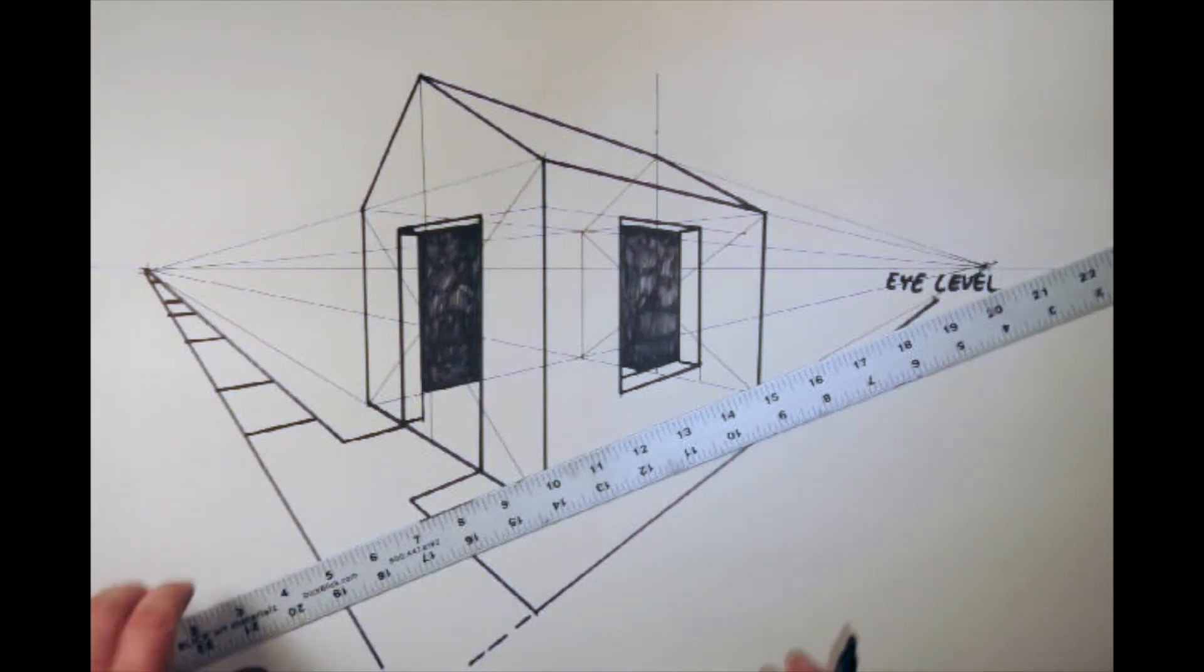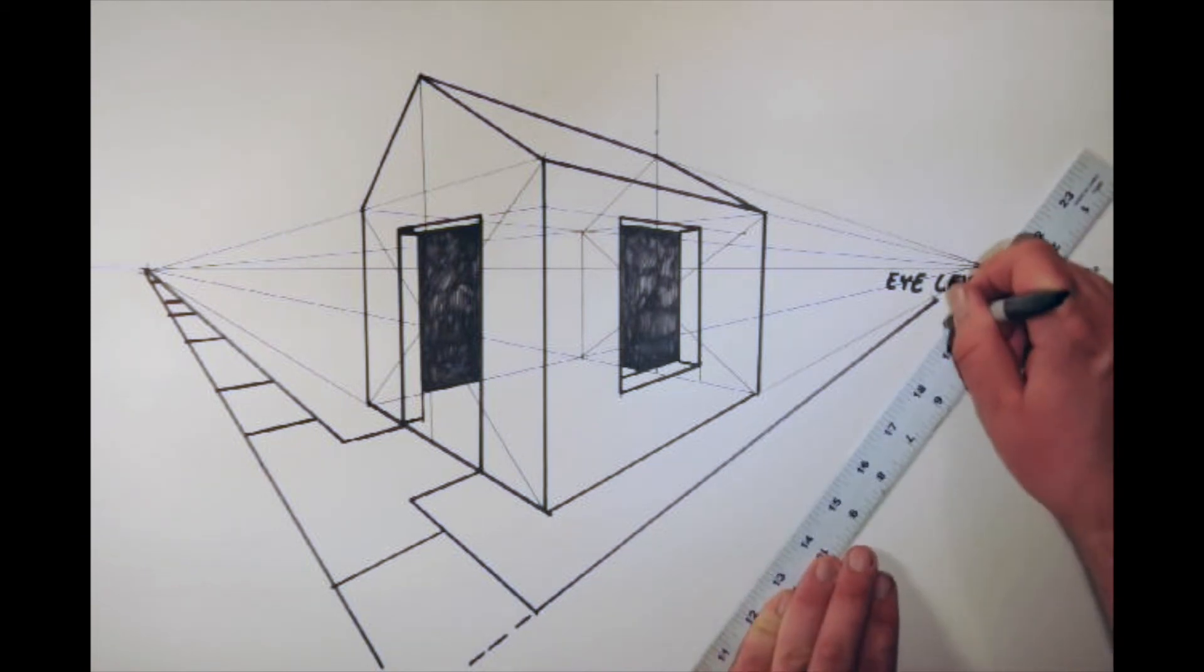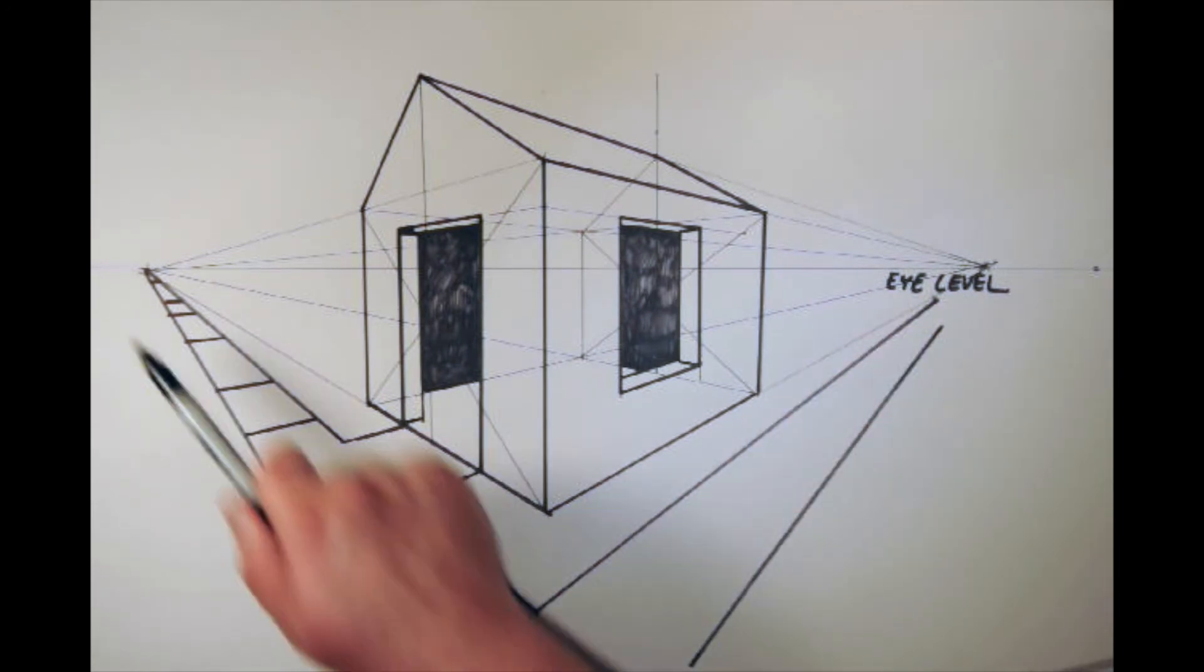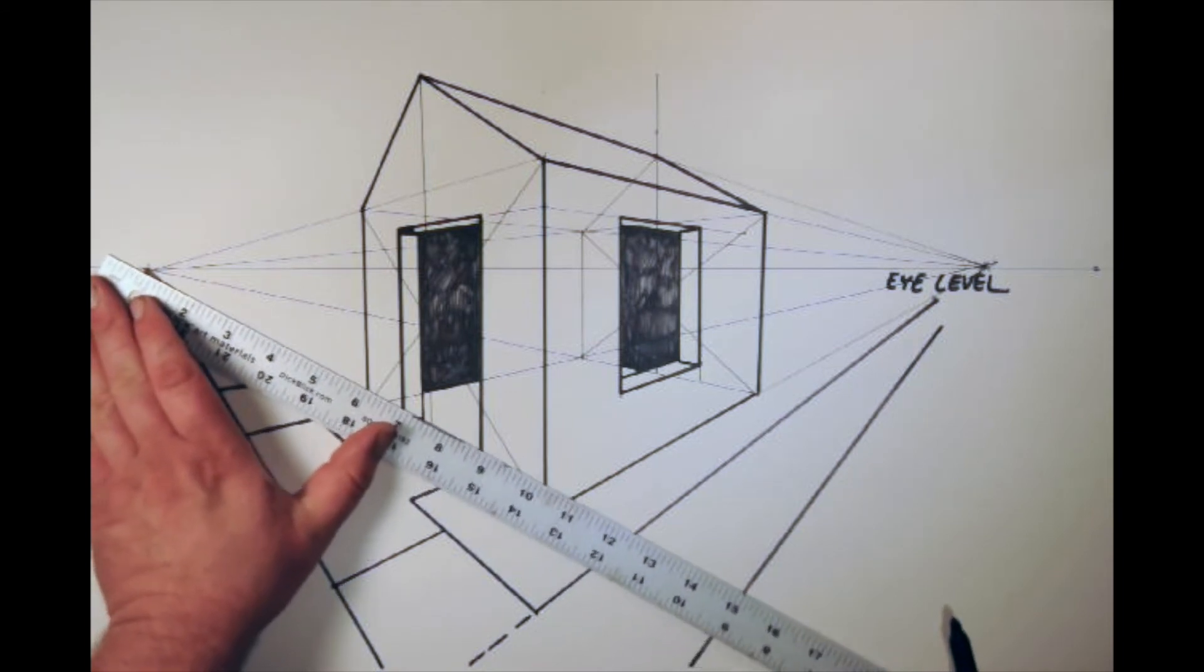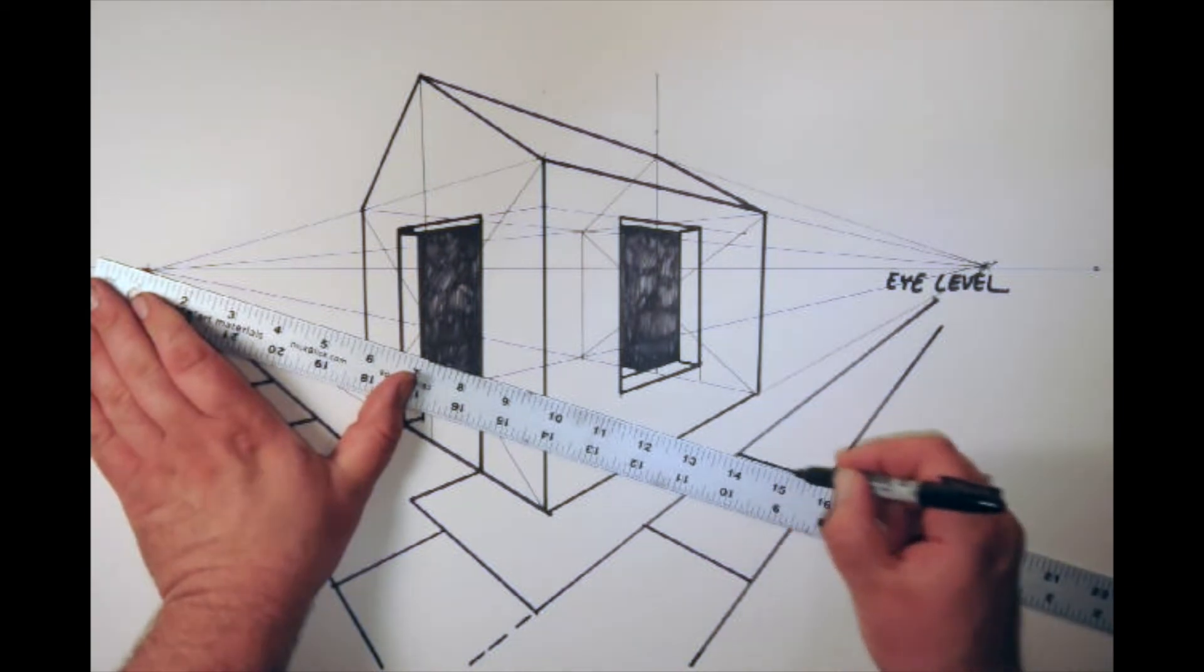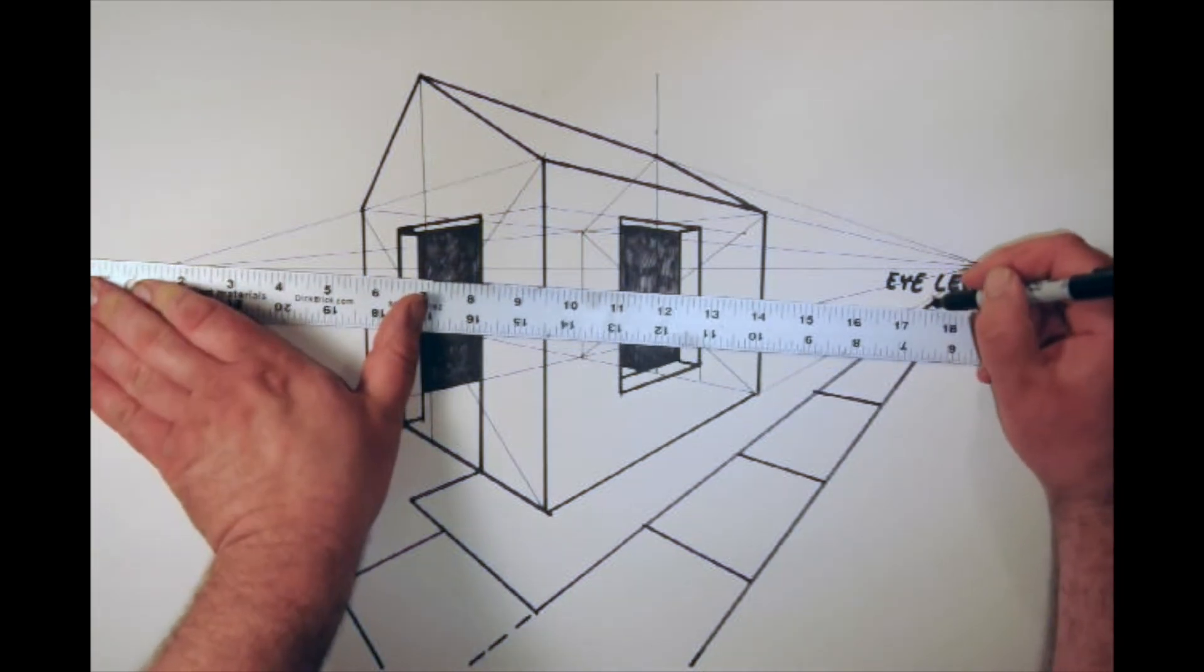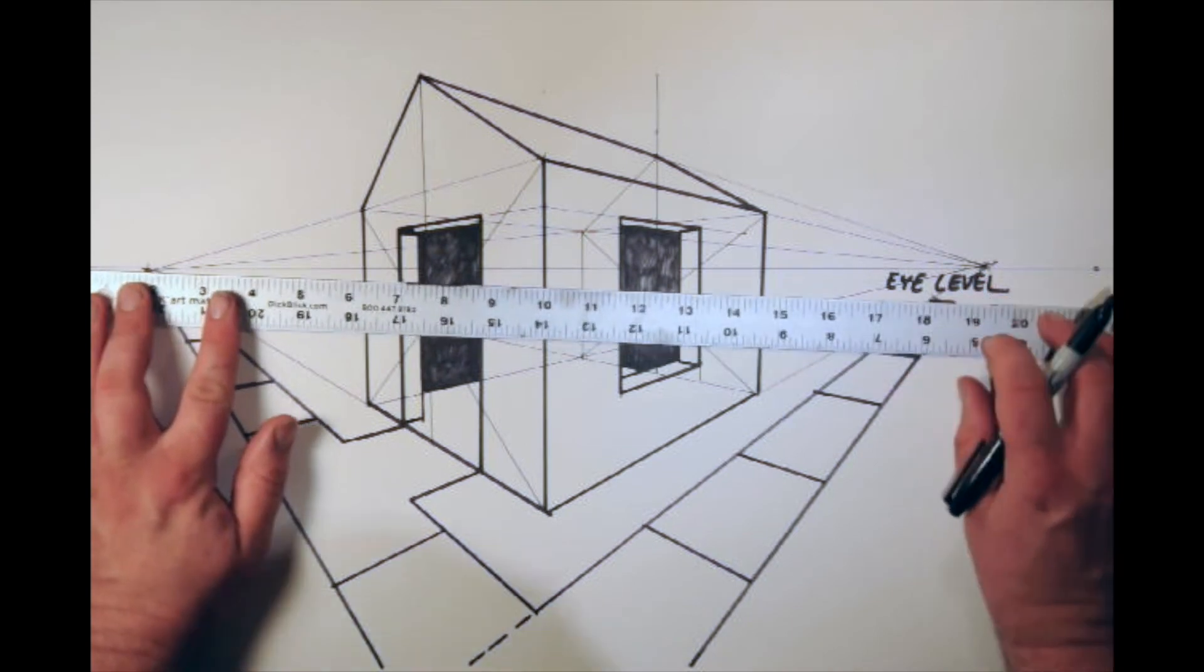We don't need to get too technical at this point. And you know, of course, the sidewalk goes back to this vanishing point. This part of the sidewalk goes back to this one, but then these lines, the breaks in the sidewalk, would go back to the opposite one. And those will be getting smaller and smaller. Okay, and then let's go ahead and define...